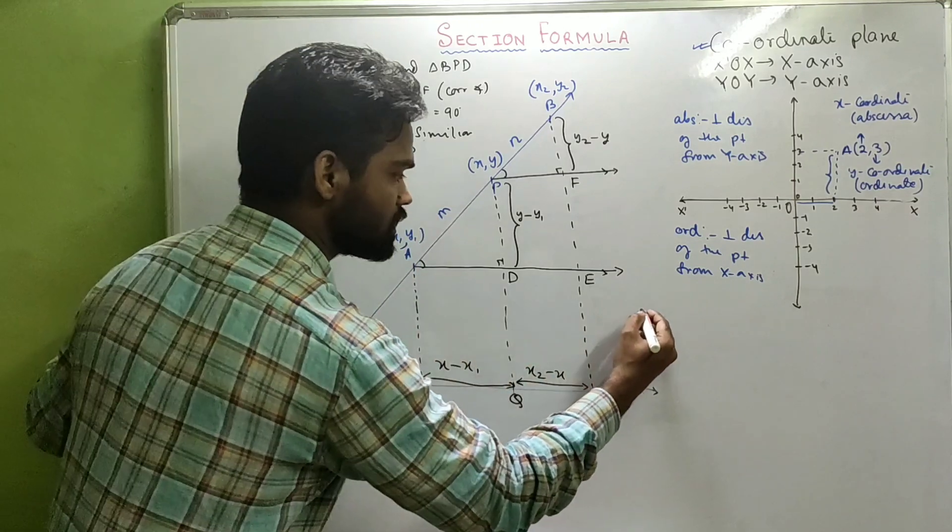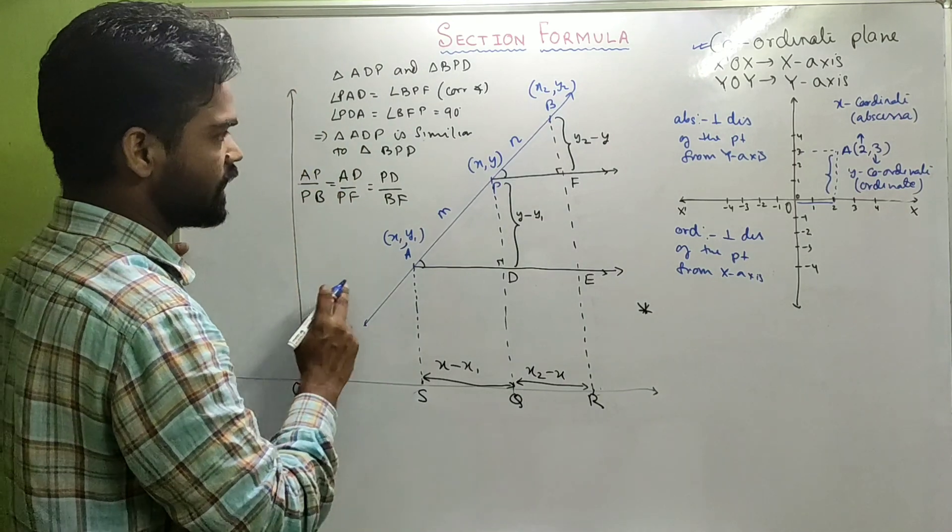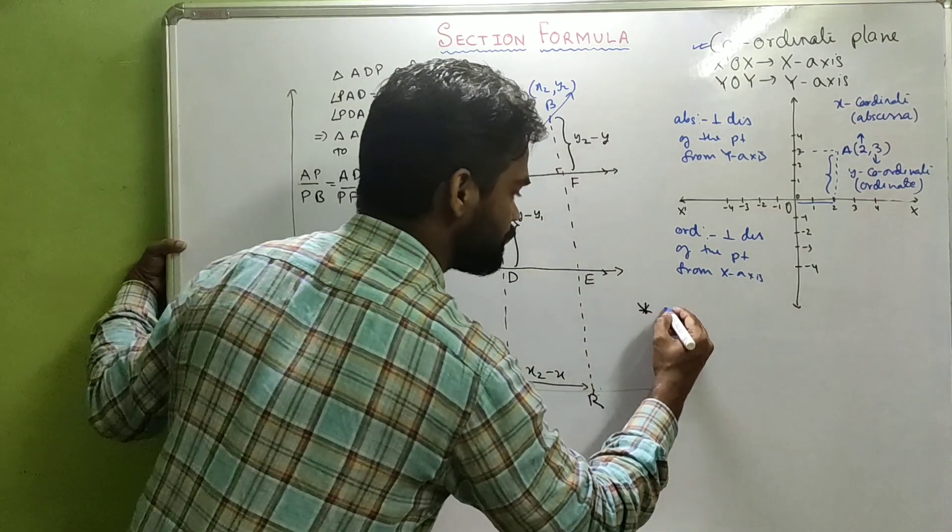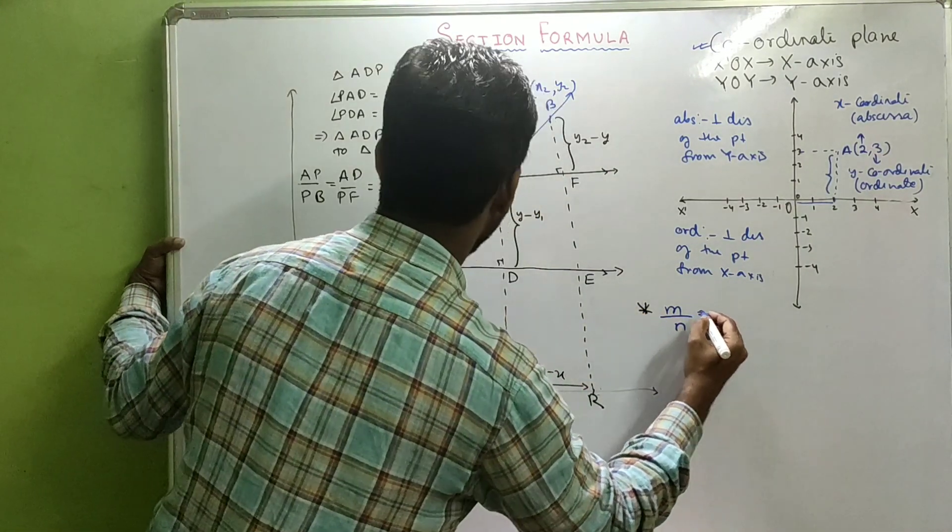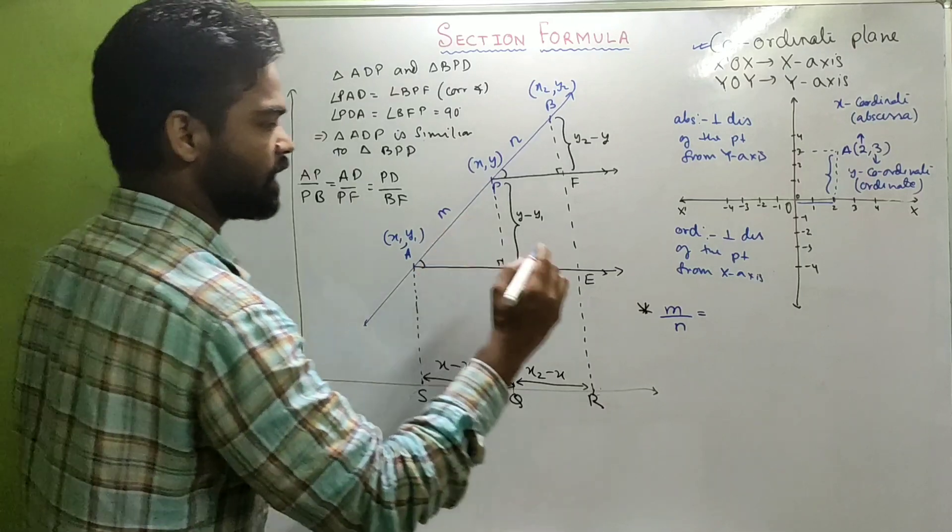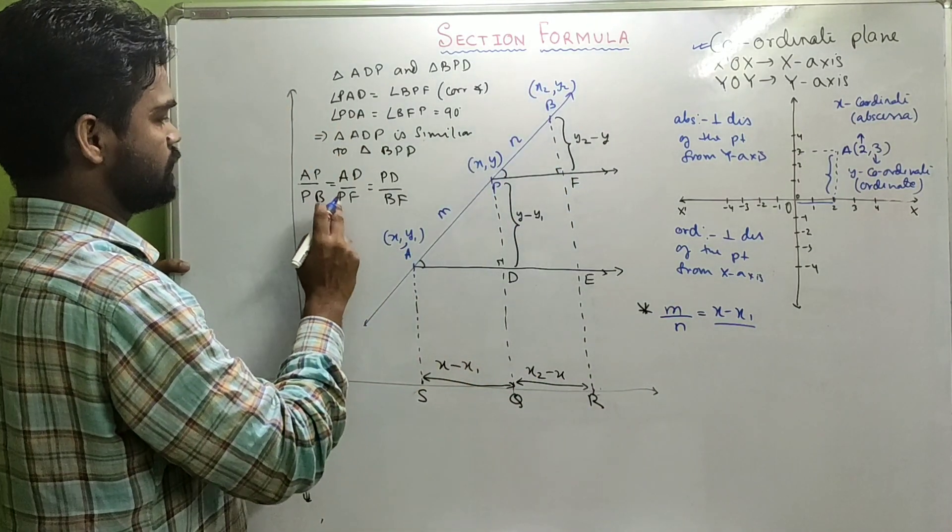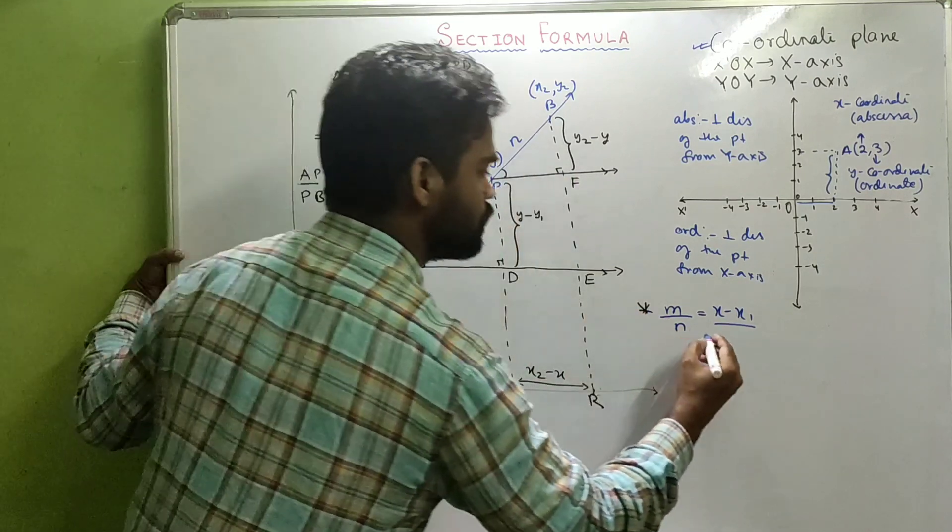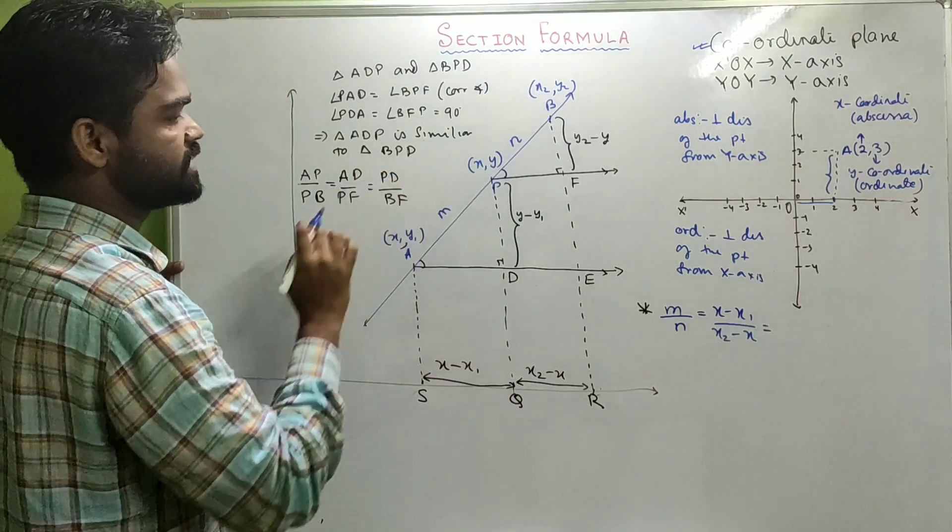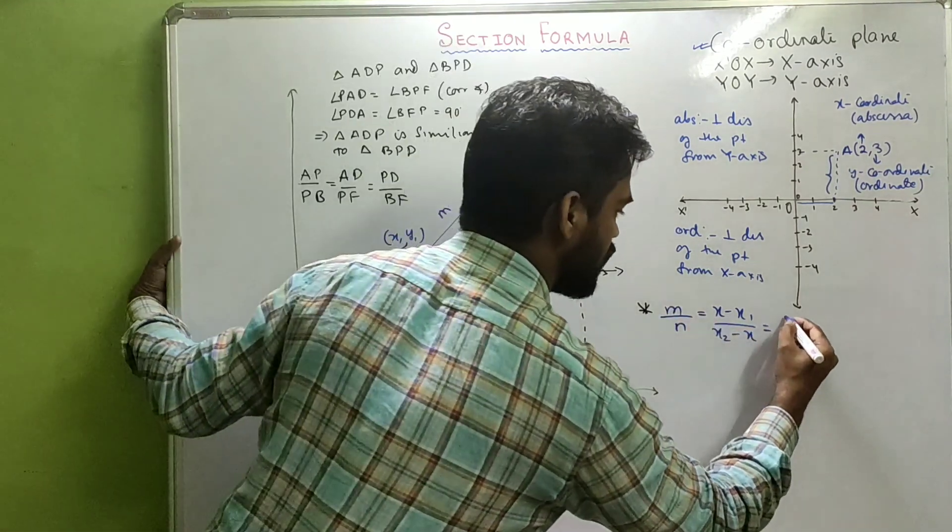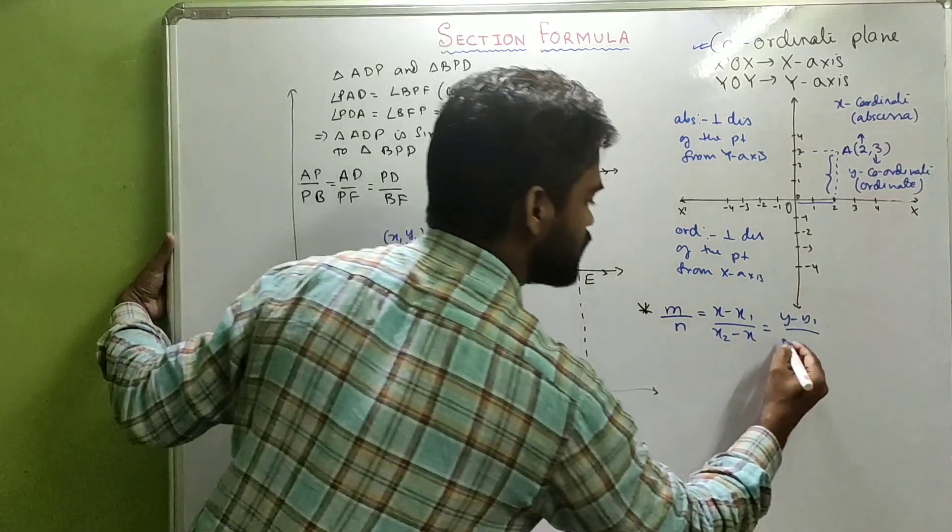Now, just substitute the values. Look carefully. AP is nothing but M. PB is N. AD is X minus X1. And PF is X2 minus X. PD is Y minus Y1. Similarly, BF is Y2 minus Y.